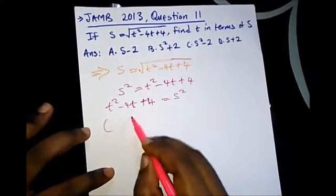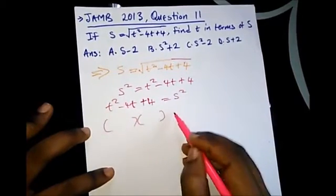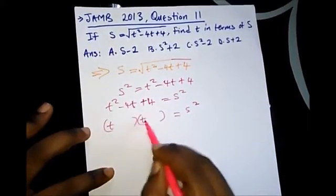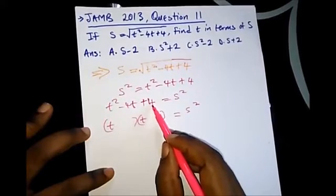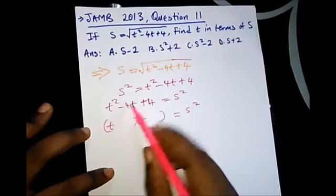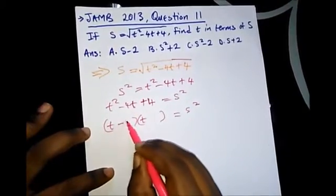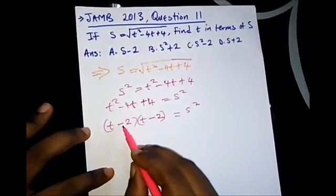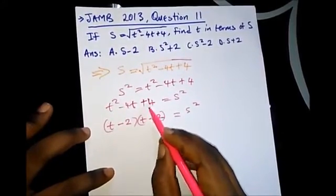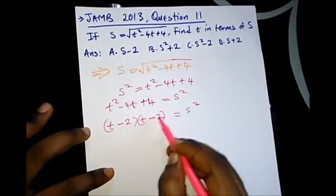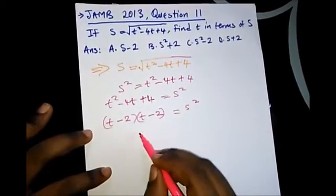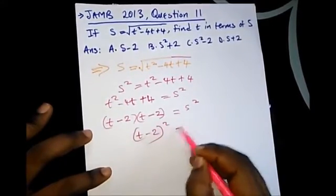Now we factorize. What are the factors of 4 that, if we add or subtract, give us -4? That would be -2 and -2. If you multiply -2 by -2 you get +4, and if you add -2 plus -2 you get -4. So this expression factors as (t - 2)².